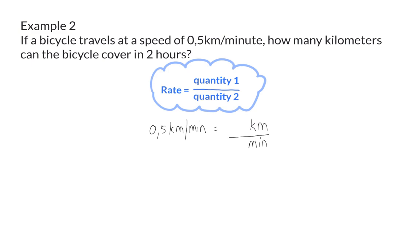The question is, how many kilometers can a bicycle cover in 2 hours? This means that we first need to convert the 2 hours into minutes by multiplying by 60, and that will give us 120 minutes.